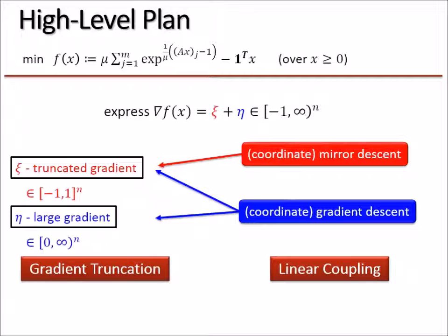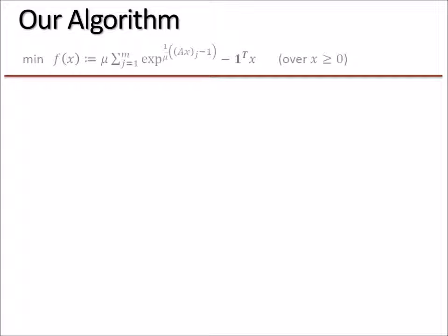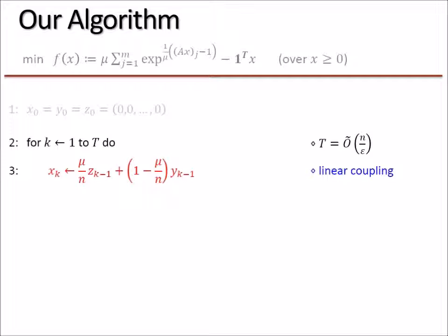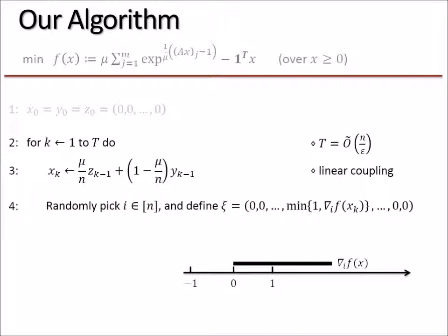So much for the high-level thing, let's go to the algorithm. Here is how it looks. Starting from x_0, y_0, z_0 being all zero vectors, we do N/epsilon iterations. At the beginning of every iteration we compute a point x to be a convex combination of z and y of the previous round. This is the linear coupling step. Then we randomly pick a point, an index i, and define qc to be the truncated gradient as follows. It's an all-zero vector except at the i-th coordinate. If you remember this picture, we define it as follows: whenever the gradient is larger than one we truncate it to one, otherwise we don't change it. That's how we define qc, the truncated coordinate gradient.